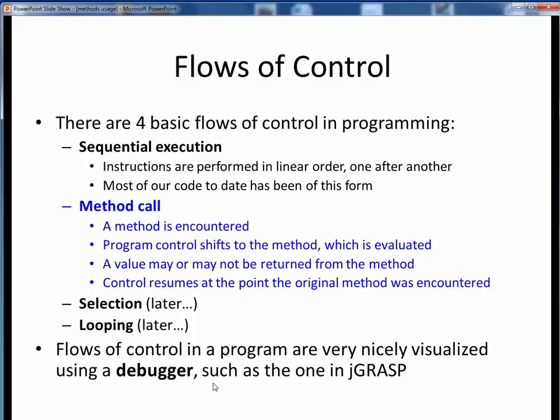As we've already seen to a small extent, the flow of control through a program is very nicely demonstrated by using a debugger so that we can single step through the path of execution. Again, I strongly encourage you to get comfortable with the JGRASP debugger for this purpose. You can take a look at some of the prior code walkthroughs for demonstration of how to do this.